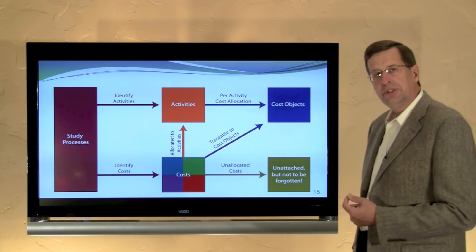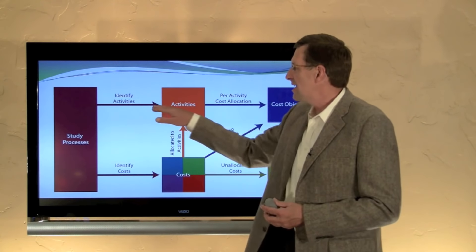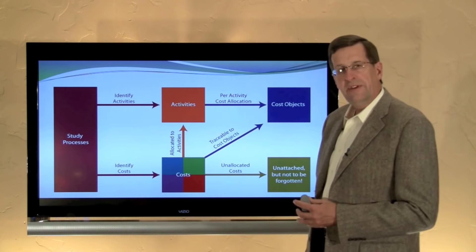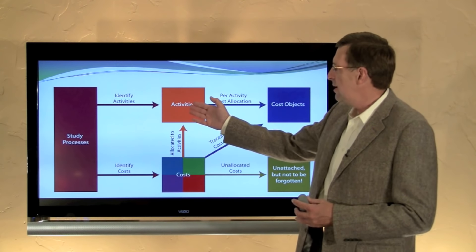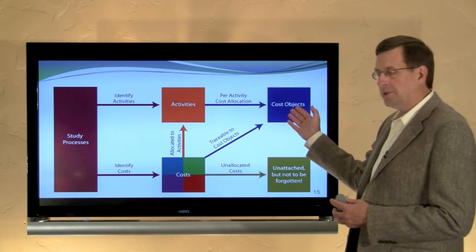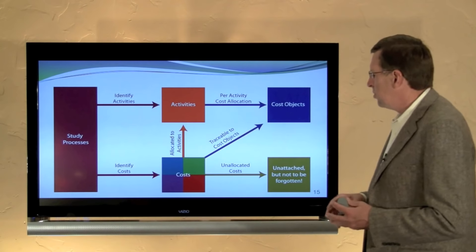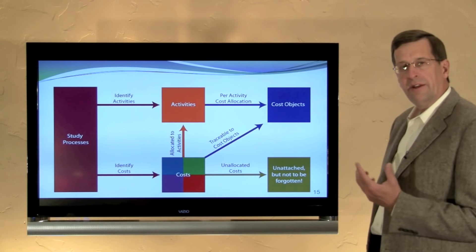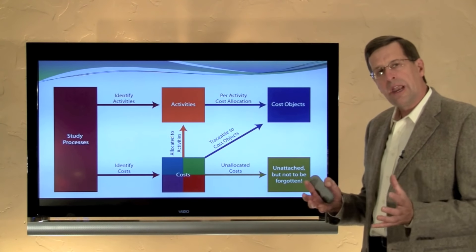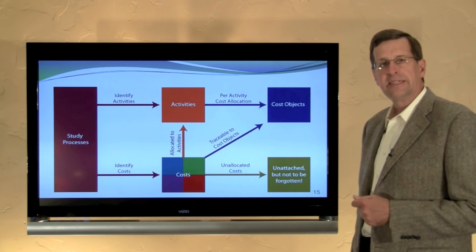Here's a diagram of the steps to setting up an ABC system. We study our processes, thinking about the costs we're incurring and the activities we're engaged in. Costs attributable to a specific activity are assigned to the activity pool, to be matched with the activities and come up with our per-activity cost allocation, which flows to the cost object. Certain other costs are directly traceable to the cost object, such as material and labor, and other costs we're not able to trace or allocate at all — unattached, but not to be forgotten. This is the general framework and model of activity-based costing. In the next video, it will begin to make far more sense when we look at an actual example in practice.